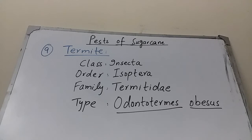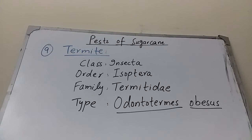The ninth pest is Termites. Systematic position: Order Isoptera, Family Termitidae, scientific name Odontotermes obesus. Only worker termites cause damage to the crop. Workers attack newly planted seeds, entering through cut ends and feeding on soft tissue. The shoots are filled with soil, dry up entirely, and can easily be pulled out. For control, the queen and termitarium must be located and destroyed. This concludes the discussion of major insect pests attacking the sugarcane crop.